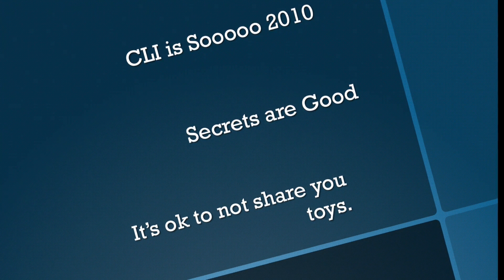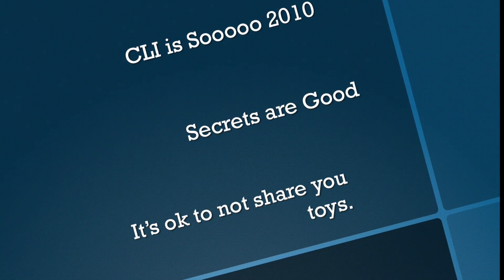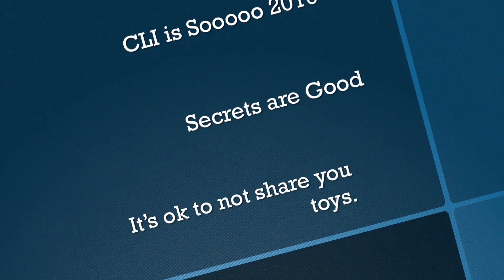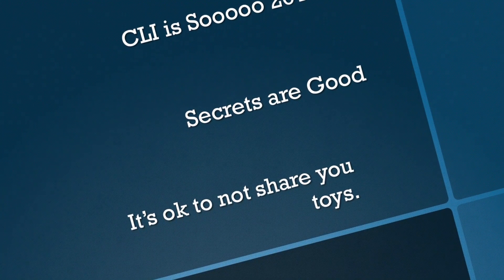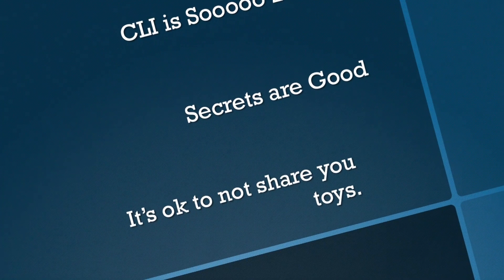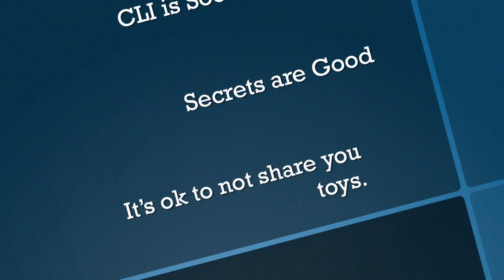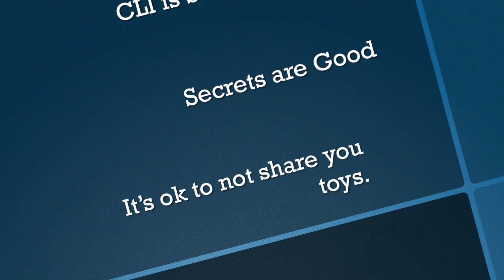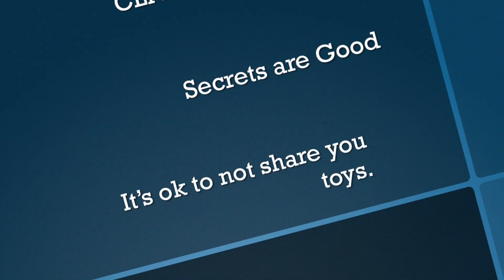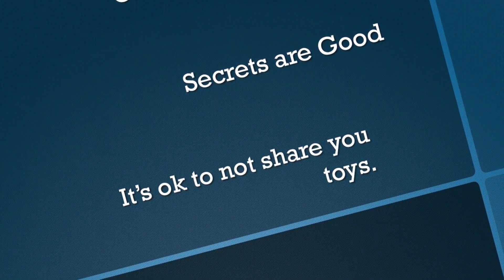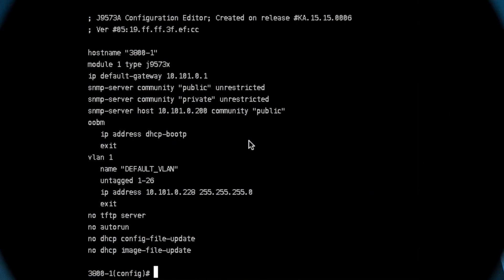Welcome back. Today we're going to be configuring SNMP v3 on an HP 3800 ProVision OS switch using IMC, because CLI is so 2010. SNMP v3, unlike earlier versions v1 or v2c, is encrypted and offers integrity, so you can verify your secrets are safe, people can't sniff your password, and you can verify who's actually contacting your devices.